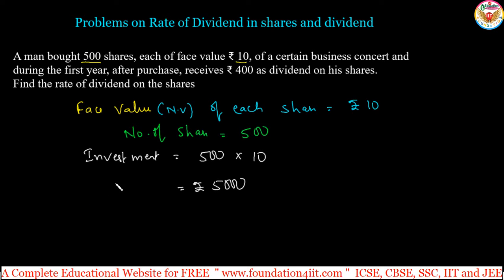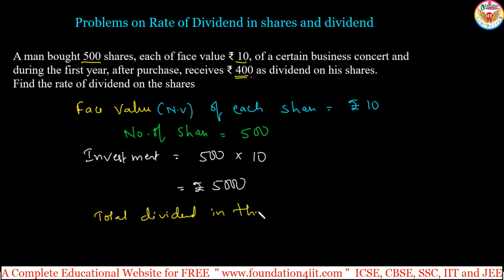The total dividend in the first year is given: during the first year after purchase, he receives ₹400 as the dividend on his investment of ₹5000. So total dividend in the first year is ₹400.